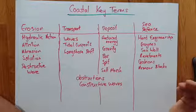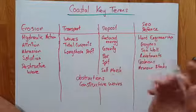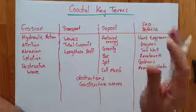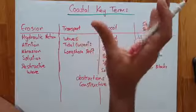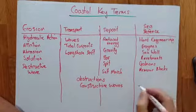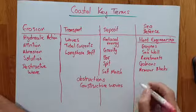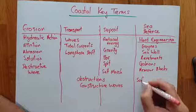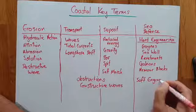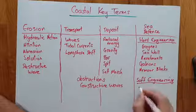Armour blocks are concrete blocks — not always blocks these days, sometimes a three-pointed prong or triangle shape. They come in different shapes and are piled up around the coastline so that when the waves come in they wear the concrete rather than the coastline.